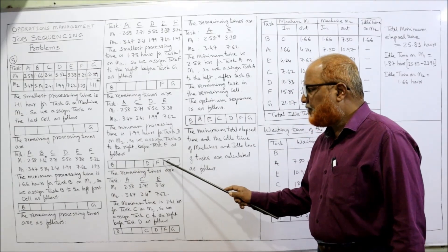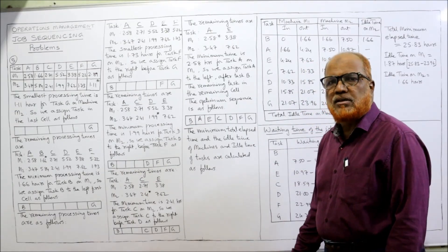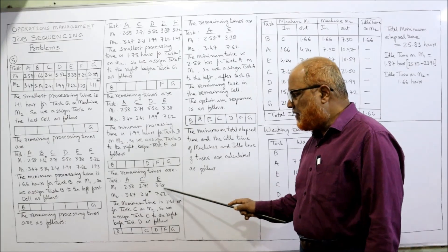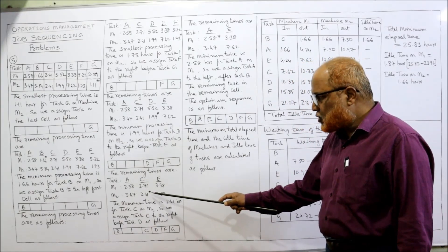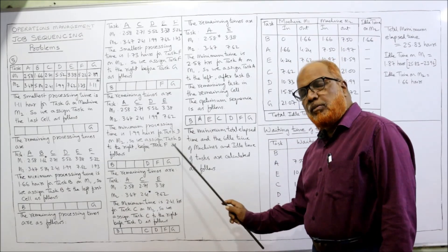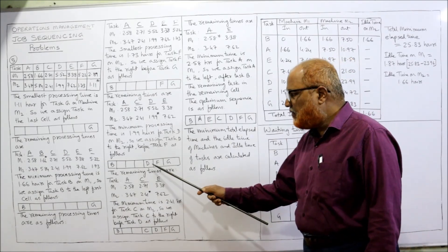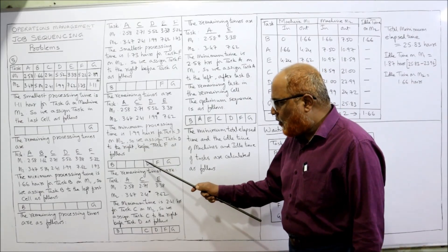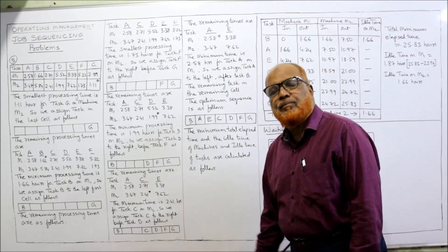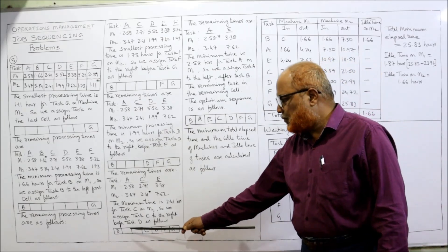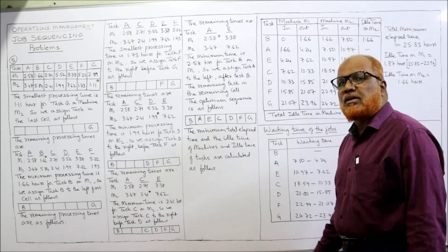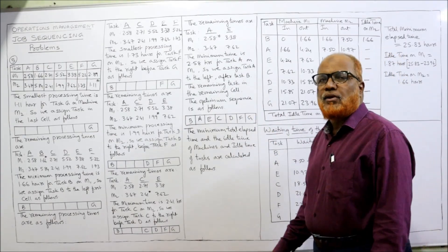So the sequence so far is B, D, F, G — four tasks completed. The remaining are A, C, E. The minimum time among these is 2.41, for job C on M2. M2 means assign from the right. D, F, G are already on the right, so before D we assign C: ...C, D, F, G. The sequence is now B, _, _, C, D, F, G with two unoccupied cells.